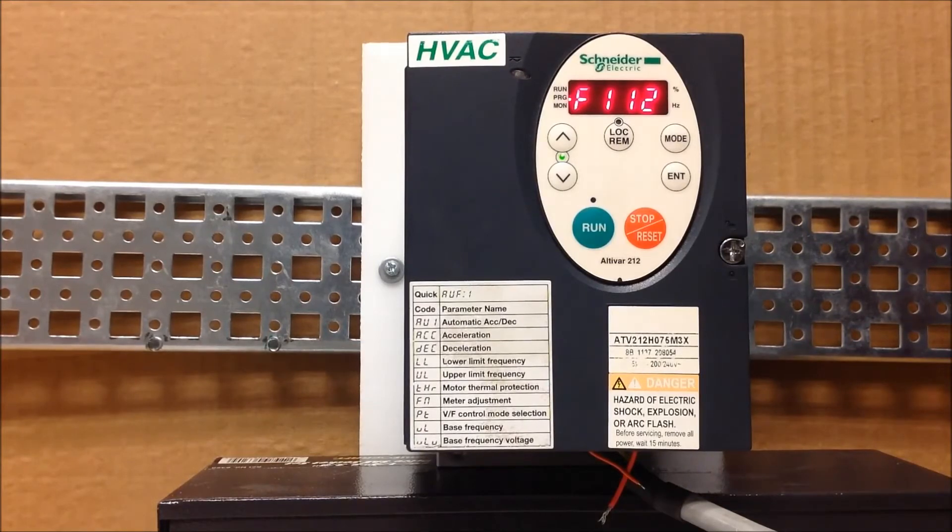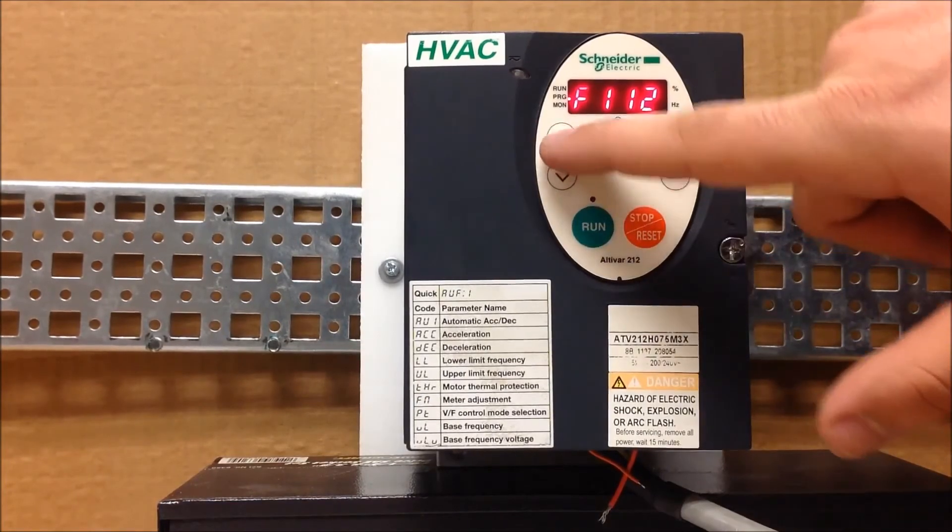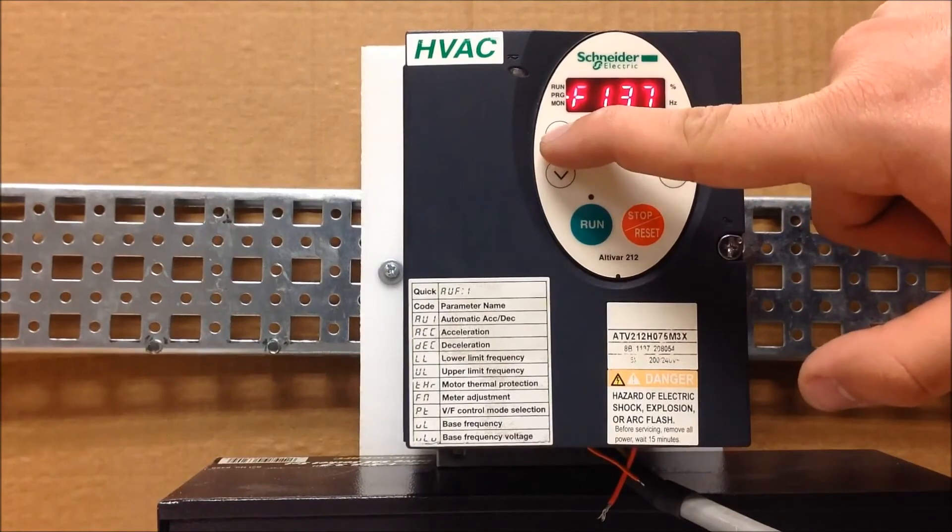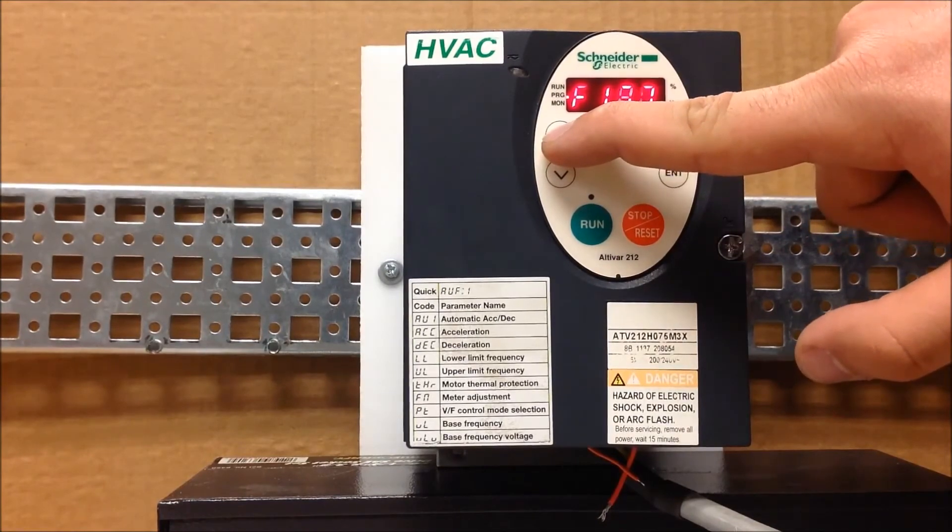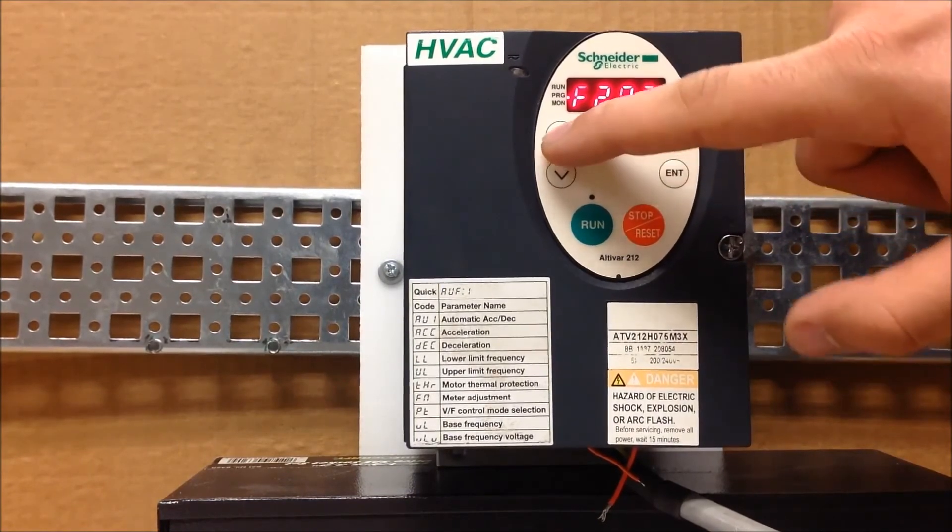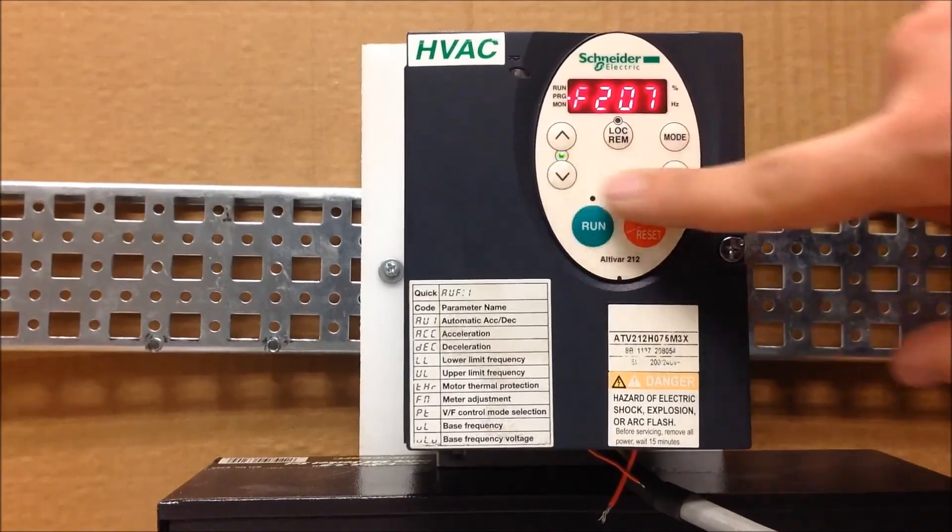So your first source right now is up and down. Let's go ahead and assume you want to use the VIA analog input value as your second speed source. To program that in, you have to go to F207, so 207 is your second speed source. Enter.